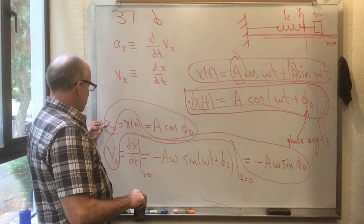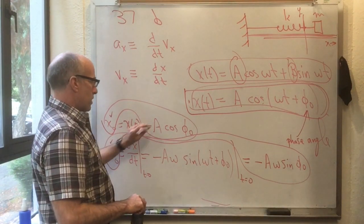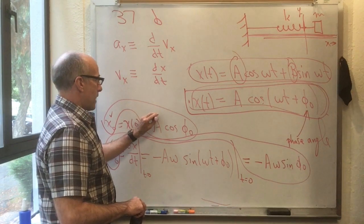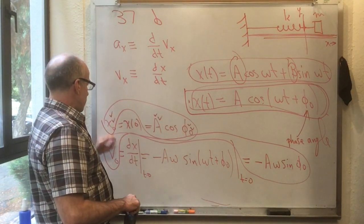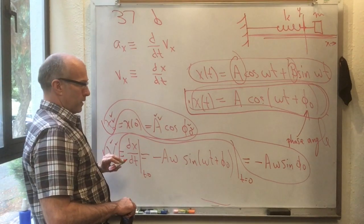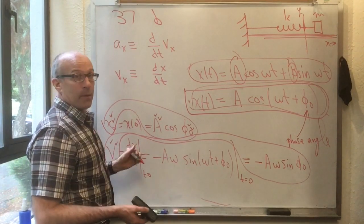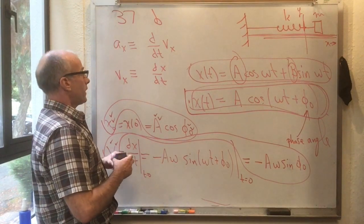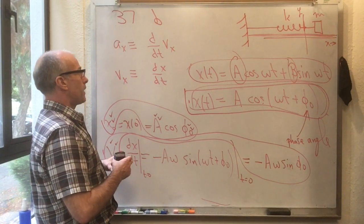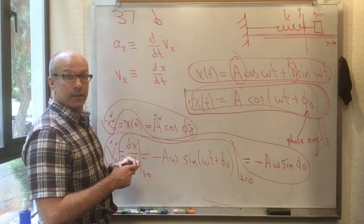Sometimes it's useful to, like if you're given these two to be able to get A and phi naught, or if you're given A and phi naught to be able to get x naught and v naught. There's just different ways of describing the motion. Okay, that's 37B.